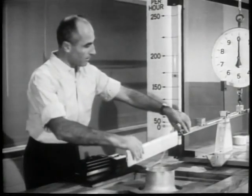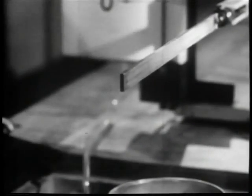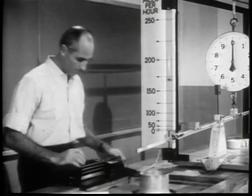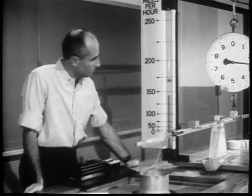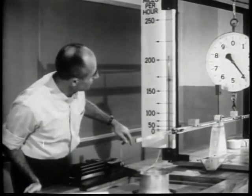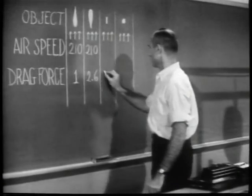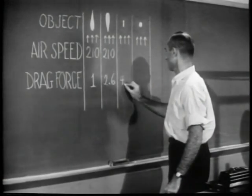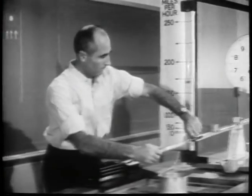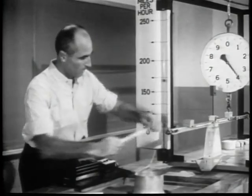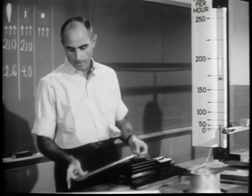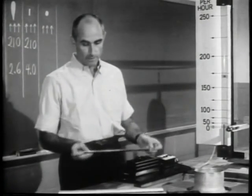Now let's take the airfoil off altogether so that we measure the drag of the rectangular support alone. Even though the cross-sectional area of this rectangular support is very much less than that of the airfoil, its drag is about four times as large.